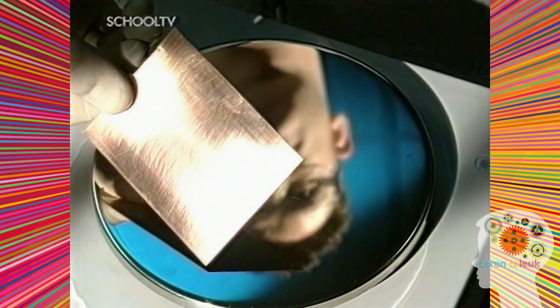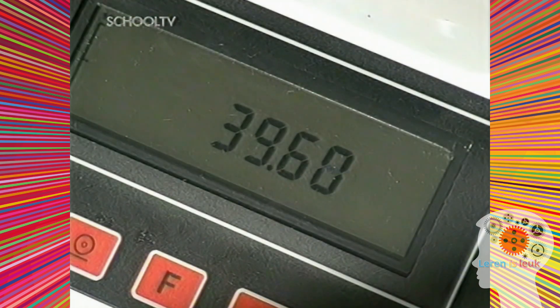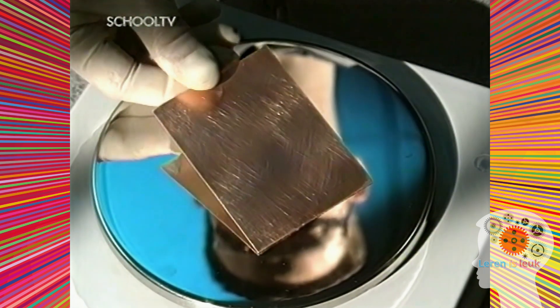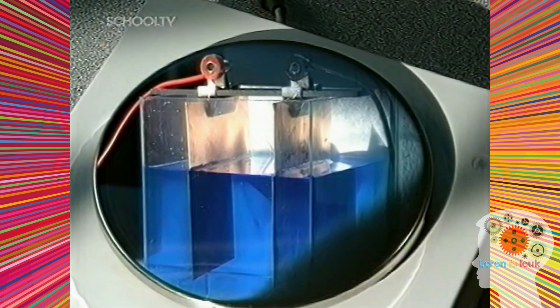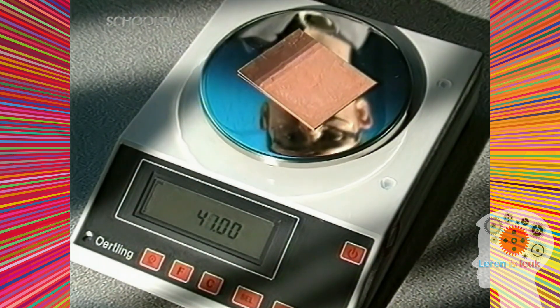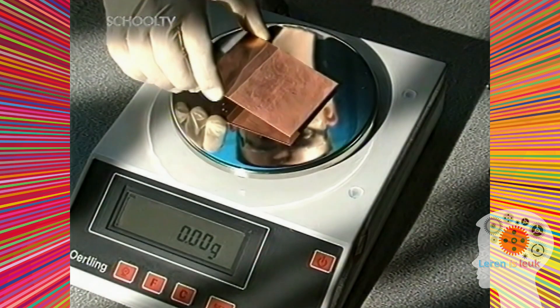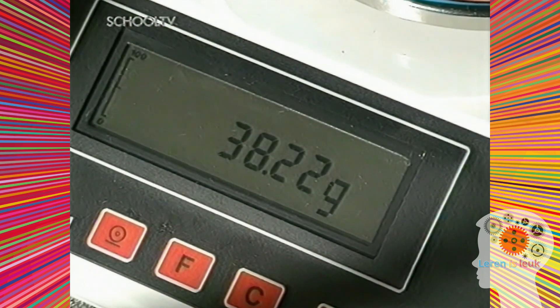Om te zien wat er gebeurt, moeten we eerst een nieuw paar elektroden wegen. Dit wordt de positieve elektroden. Hij weegt 39,60 gram. De negatieve elektroden weegt 39,61 gram. Ze zijn bijna even zwaar. Twee uur later wegen we ze opnieuw en zien dan wat er is gebeurd. Maar eerst moeten de elektroden worden afgespoeld en gedroogd. De negatieve weegt nu 40,92 gram. Hij is zwaarder geworden. De positieve weegt 38,22 gram. Deze elektroden is lichter geworden.